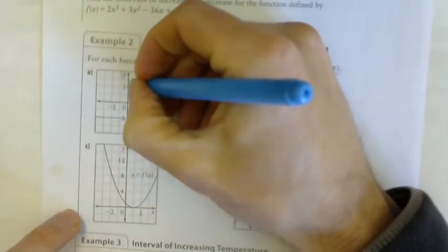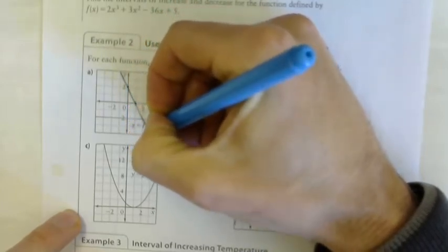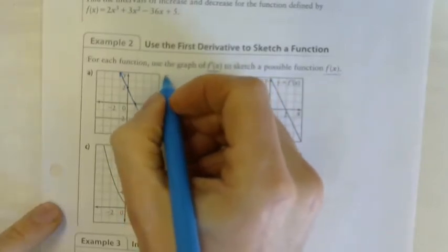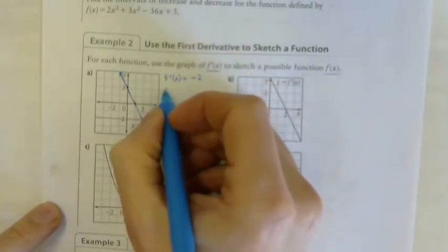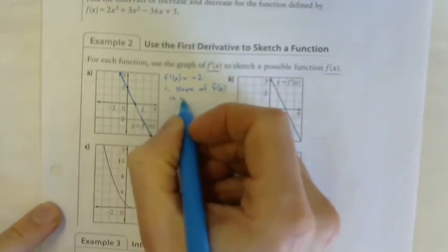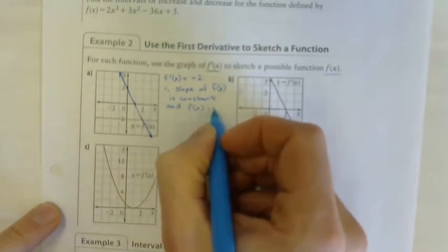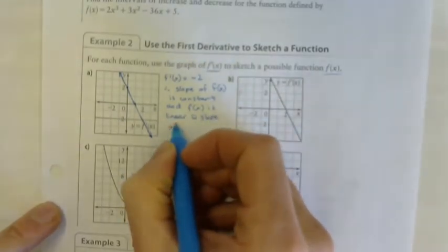I'm drawing mine through zero-two and one-zero. That is a possible graph of f of x. Note: f prime of x equals negative two, therefore the slope of f of x is constant, and f of x is linear with slope of negative two.